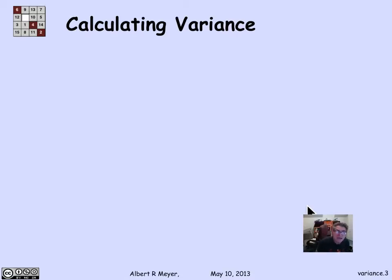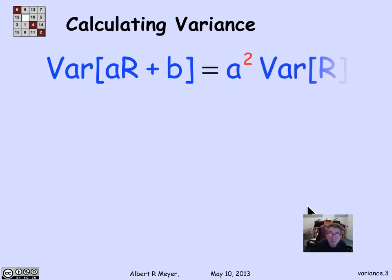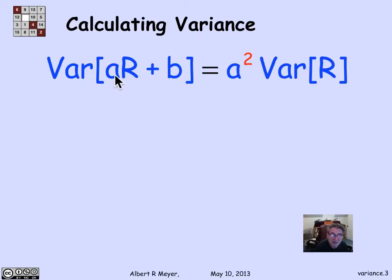There are a couple of other basic rules for calculating variance of new variables from old ones. The first rule is that the variance of aR plus b equals a squared times the variance of R. The additive constant b doesn't matter. Because variance involves squaring, when you factor out the constant a, you get a squared.